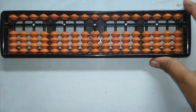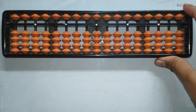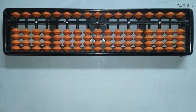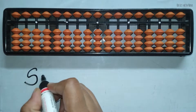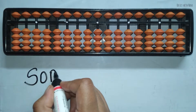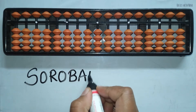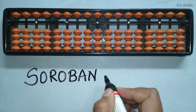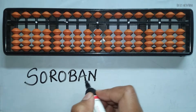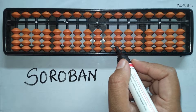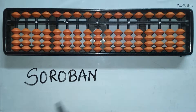So initially, if somebody asks you what tool you work with, you should know the name of the tool. The name of the tool is Soroban — S-O-R-O-B-A-N. Soroban is the name of this abacus tool, and this particular abacus works on base 10.